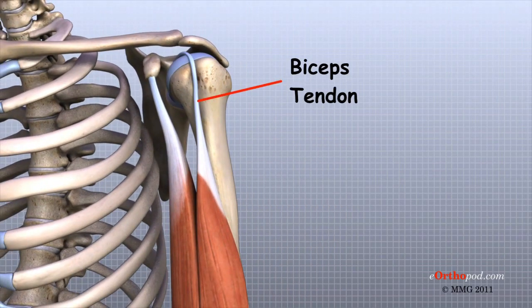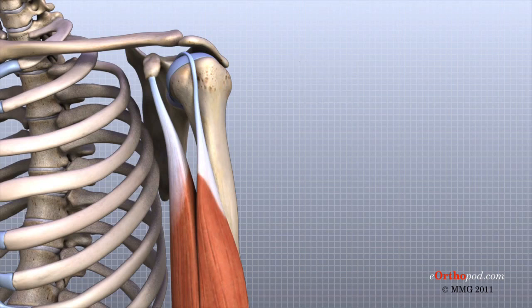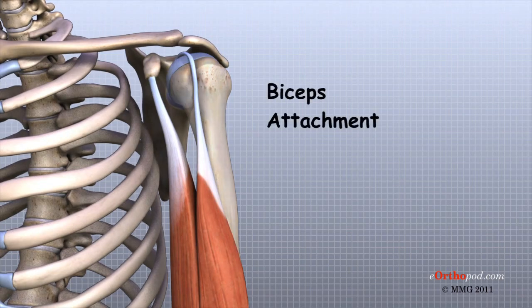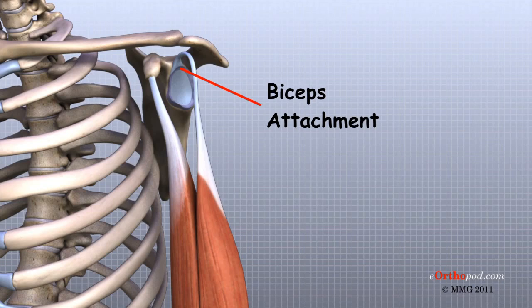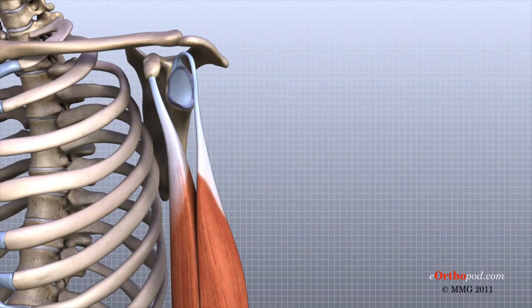Tendons are much like ligaments except that tendons attach muscles to bones. Muscles move the bones by pulling on the tendons. The biceps tendon runs from the biceps muscle across the front of the shoulder to the glenoid. At the very top of the glenoid, the biceps tendon attaches to the bone and actually becomes part of the labrum. This connection can be a source of problems when the biceps tendon is damaged and pulls away from its attachment to the glenoid.